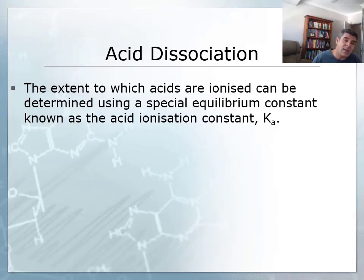We can calculate the value of Ka in the same way we usually do for any equilibrium constant by looking at the concentration of the products divided by the concentration of the reactants.